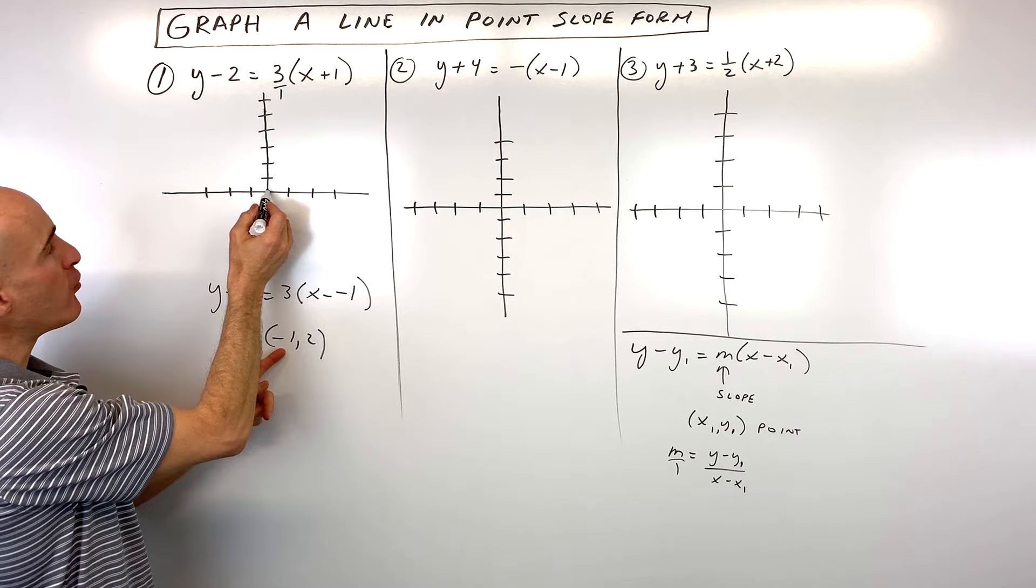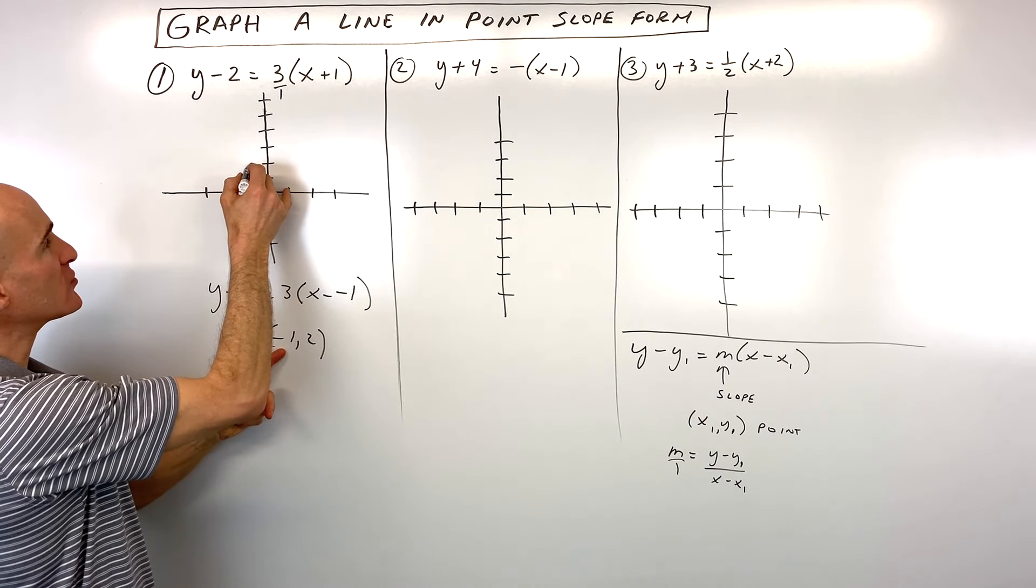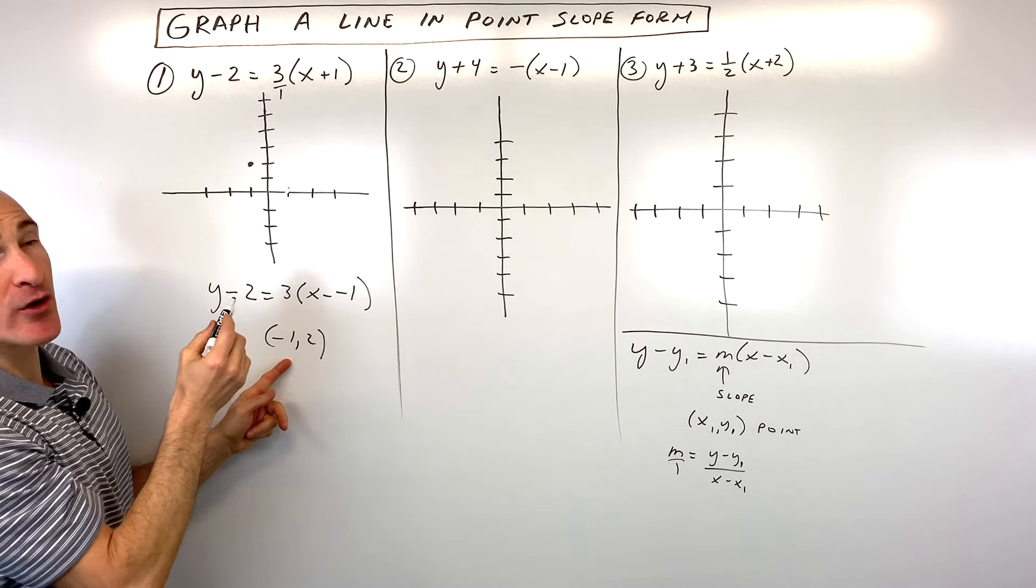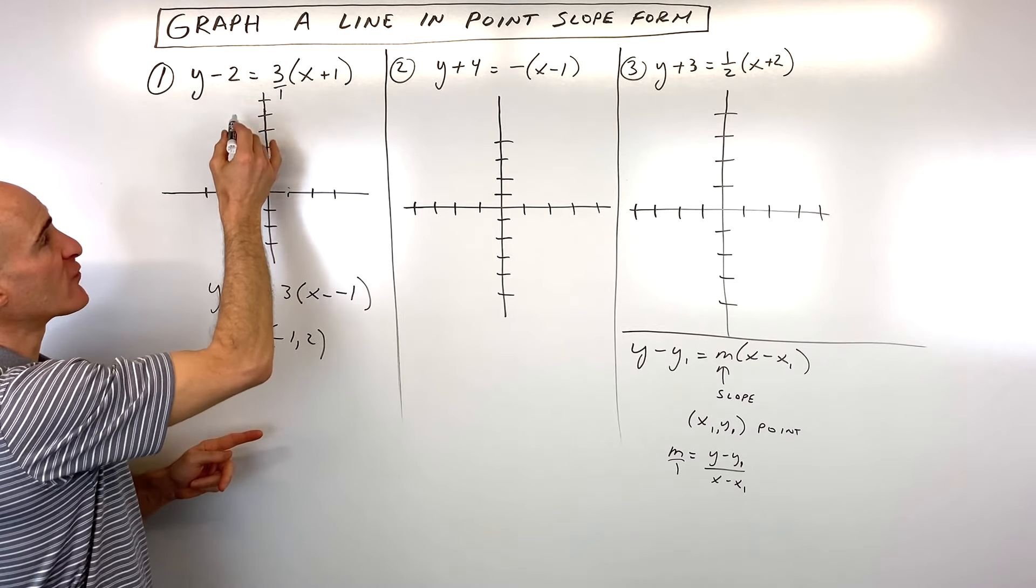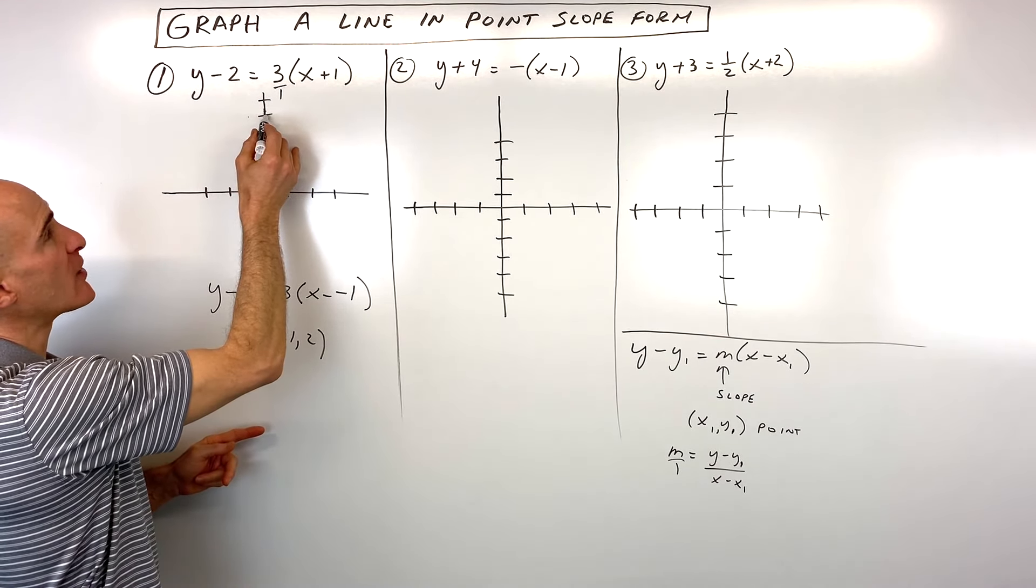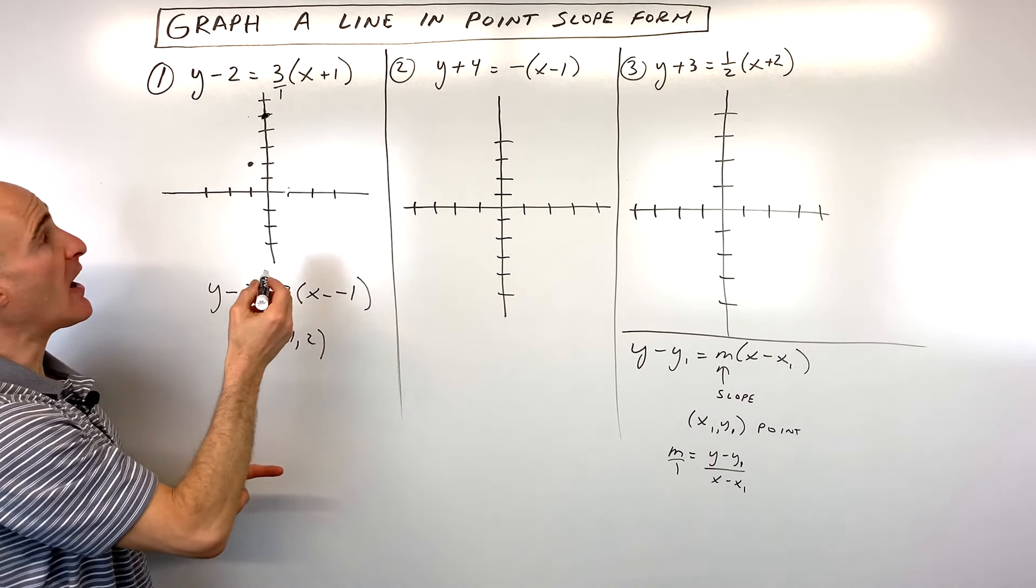So let's locate our point, negative 1, and the y coordinate is positive 2, so up 2. And then from this point now, what we're going to do is we're going to go rise 3 and run 1. So the numerator is the rise, the vertical direction. We're going to go up 1, 2, 3. The run is the horizontal direction. It's positive 1, so I'm going right 1. And we've got another point on our line.